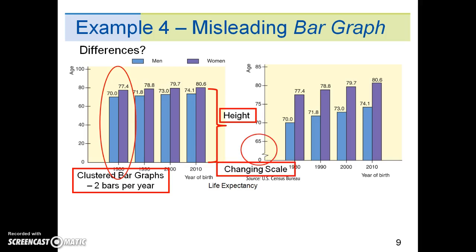An important feature illustrated on the right is that of a changing scale. Notice that the scale between 0 and 65 is compressed. The changing scale amplifies the apparent difference between life expectancy for men and women as well as the increase in life expectancy from those born in 1980 to the projected span of those born in 2010.